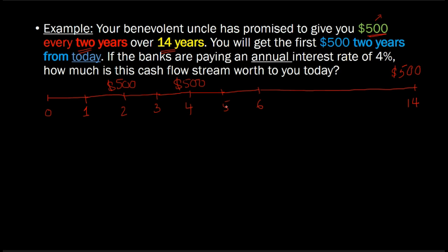It is still a seven-year annuity. What defines an annuity and its term is that you get seven $500 payments. Don't define an annuity based on the number of time periods you're going out into the future — this is not a 14-year annuity. It's a seven-year annuity that just goes out to 14 years given its nature.